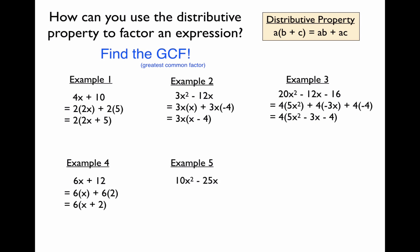For example 5, analyzing the numeric terms 10 and 25, they share a factor of 5. The variables x squared and x both share a factor of x. Factoring out 5x gives us 5x times the quantity 2x minus 5. To check: 5x times 2x is 10x squared, and 5x times negative 5 is negative 25x — equivalent to the original expression.